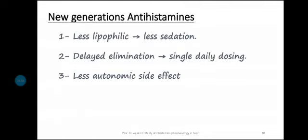The second generation antihistamines differ from the first generation by being less lipophilic, resulting in less crossing of the blood-brain barrier and less sedation — a significant advantage. They have delayed elimination, allowing a single daily dose. They also have less autonomic side effects: less anti-muscarinic, less alpha-blocking, and less serotonin-blocking effects, though not completely absent.